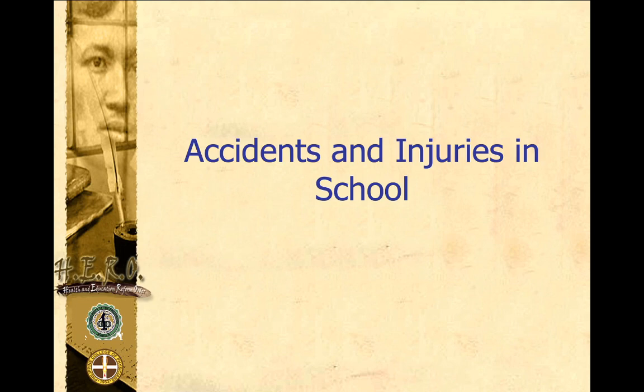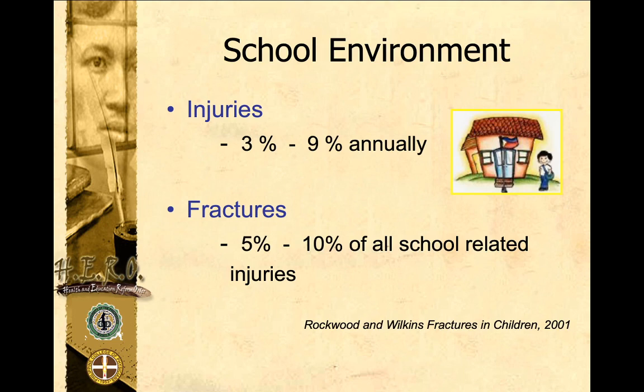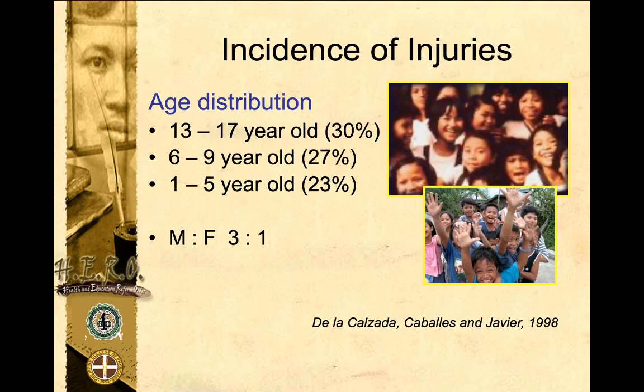The topic will discuss percentages of injuries in school, which is around 3% to 9% for children. Fractures account for around 5% to 10% of all school-related injuries. The incidence of injuries by age distribution: the lowest is around 1 to 5 years old at around 20%, at 6 to 9 years old around 27%, and the highest would be 13 to 17 years old which accounts for 30% of the population, with a 3 to 1 male to female ratio.